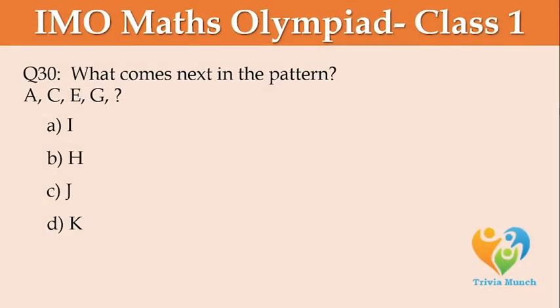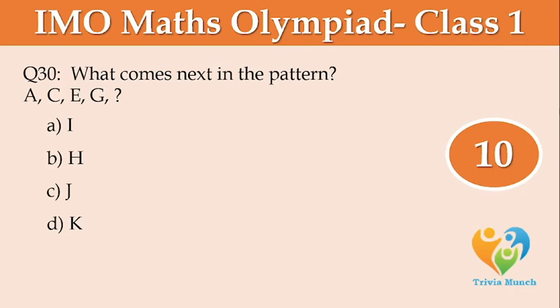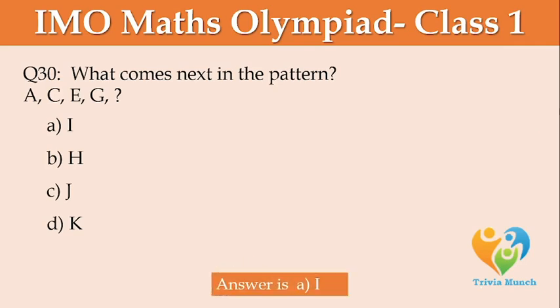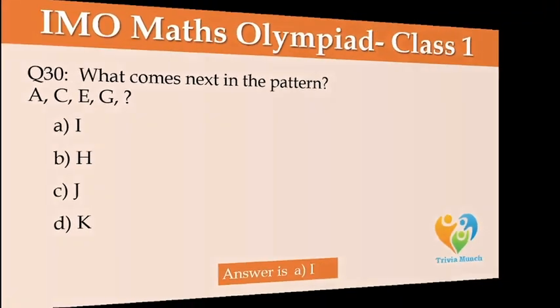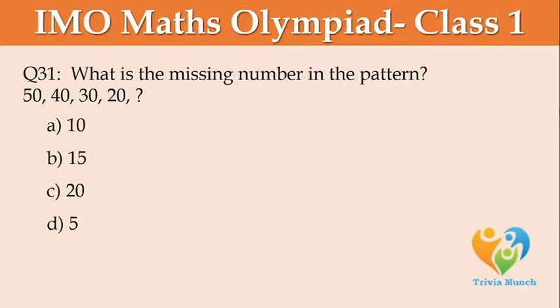What comes next in the pattern? A, C, E, G, ___. Option A: I, Option B: H, Option C: J, Option D: K. What is the missing number in the pattern? 50, 40, 30, 20, ___. Option A: 10, Option B: 15, Option C: 20, Option D: 5.